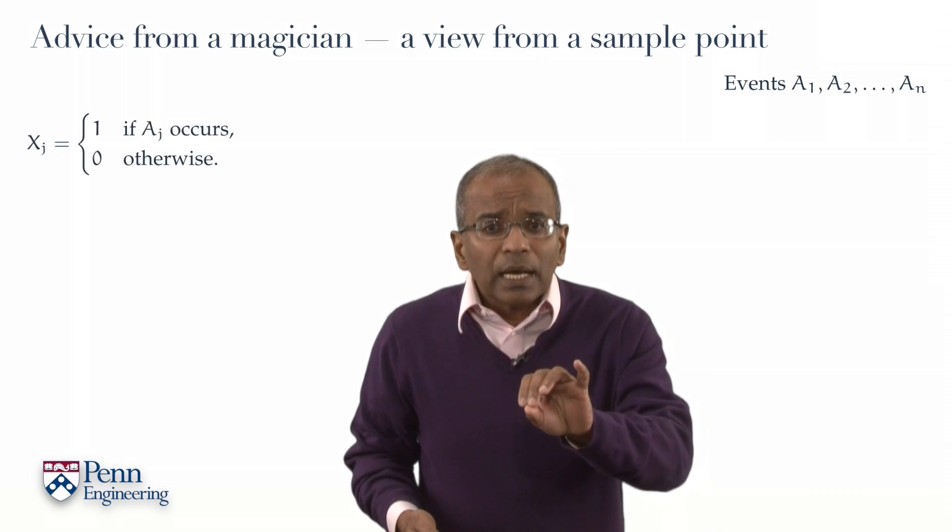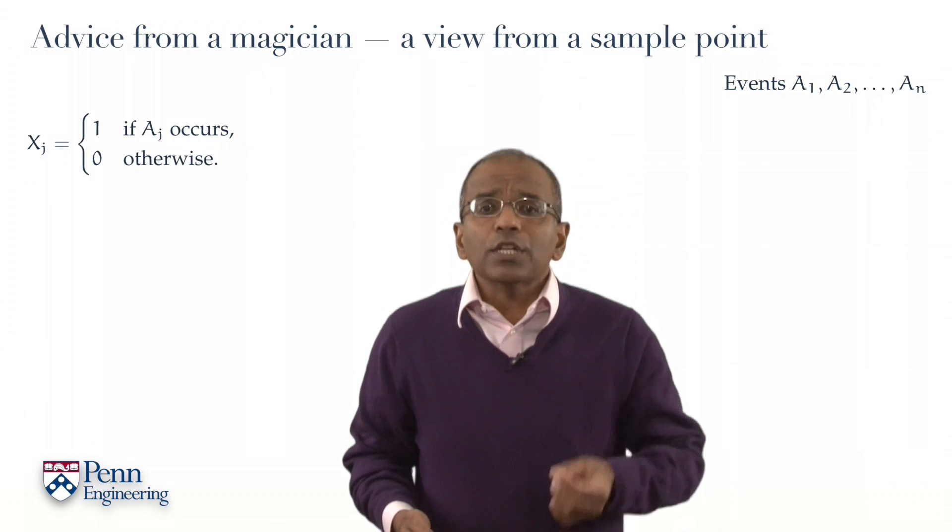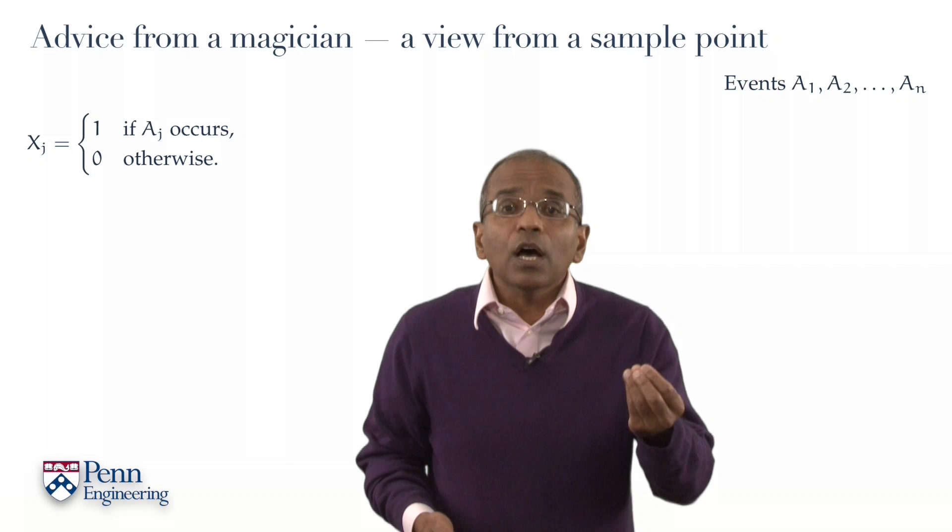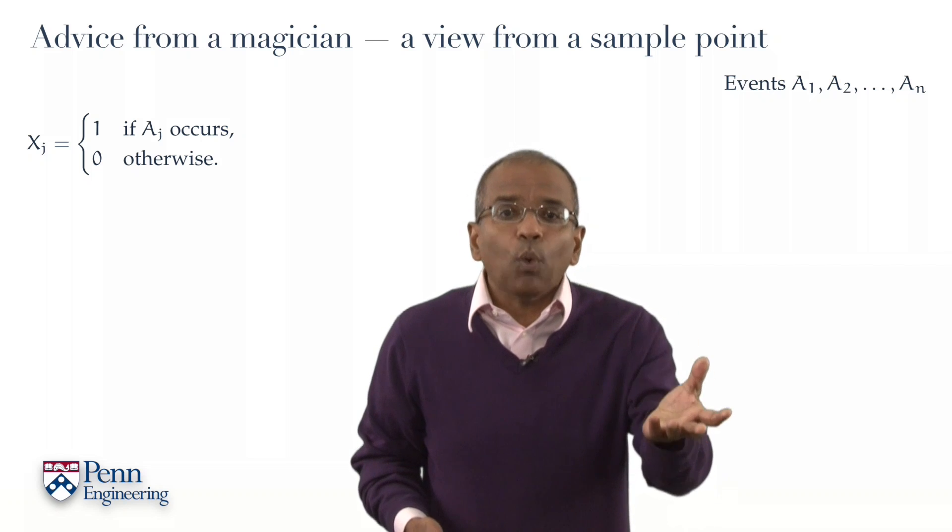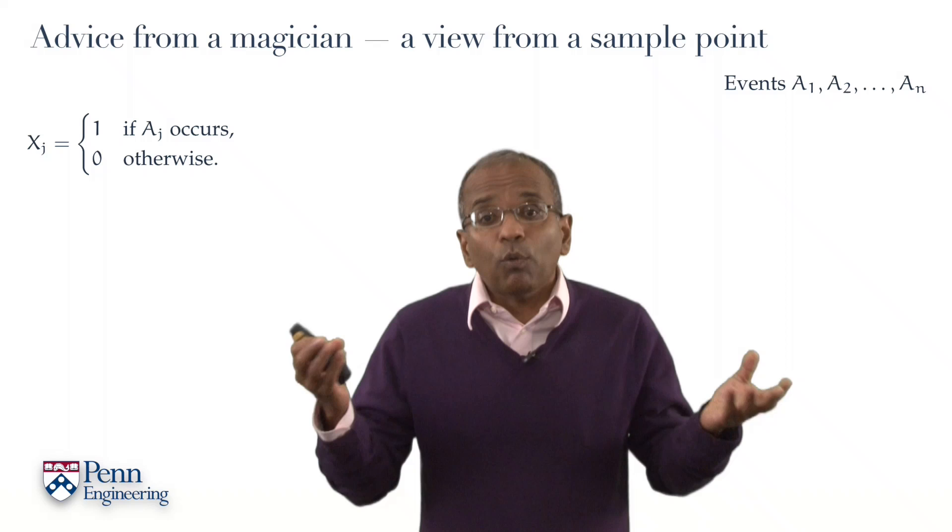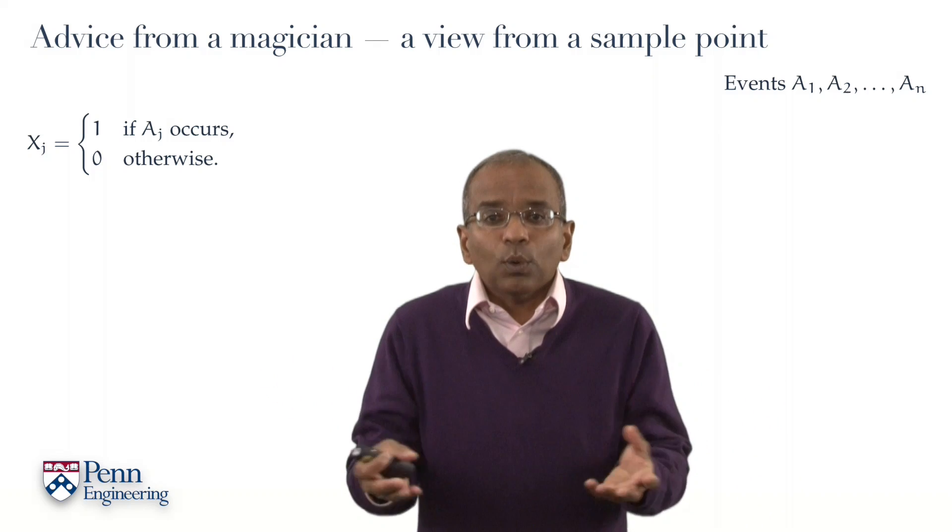Let's put together indicators for the occurrences of these events. So let's say that X1 is the indicator for the occurrence of the event A1. In other words, X1 equals 1 if A1 occurs, and X1 equals 0 otherwise.